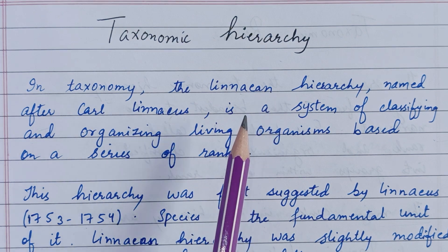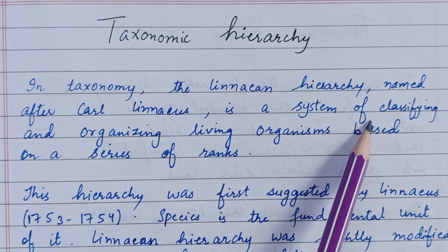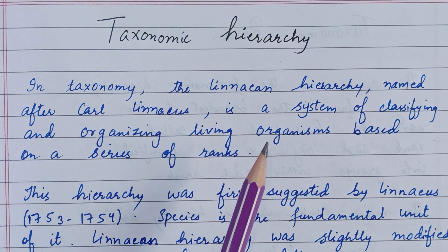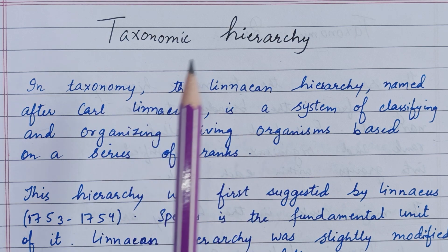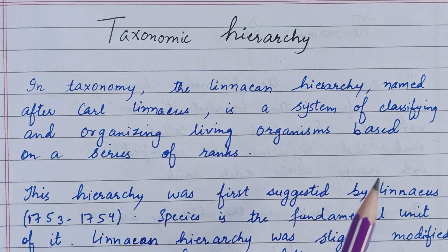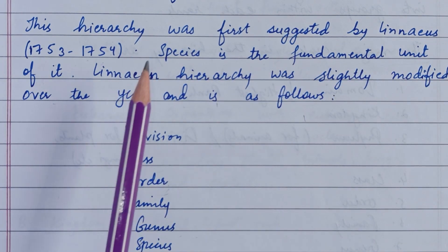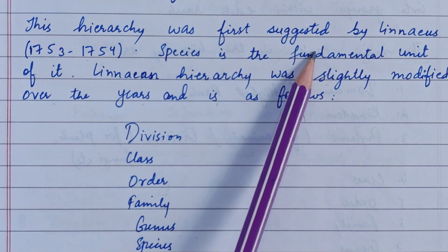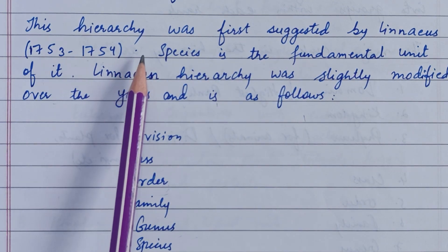In taxonomy, the Linnaean hierarchy — named after Carl Linnaeus — is a system of classifying and organizing living organisms based on a series of ranks. This hierarchy was first suggested by Linnaeus in 1753 to 1754.